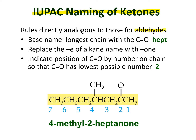In a worked example, the longest chain containing the keto group has seven carbons, so the base name is heptanone. The keto group is at carbon two, giving 2-heptanone. A methyl branch is found at carbon four, so the full name is 4-methyl-2-heptanone.